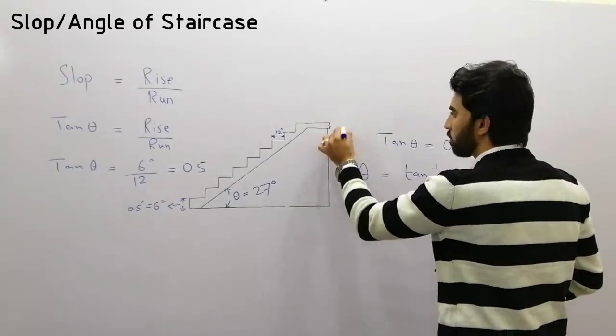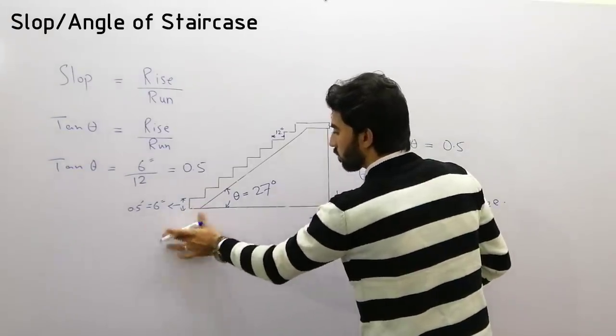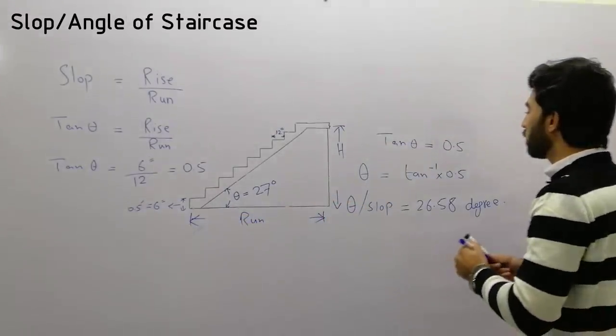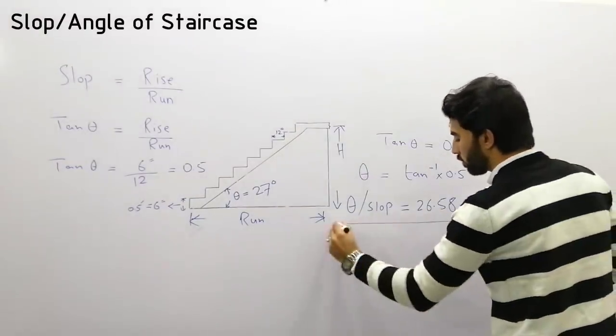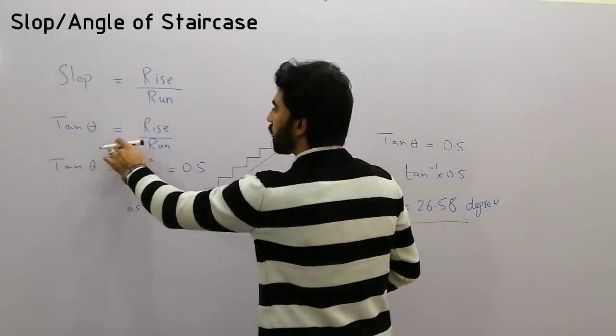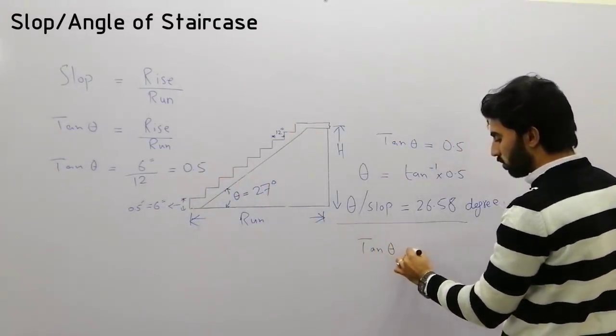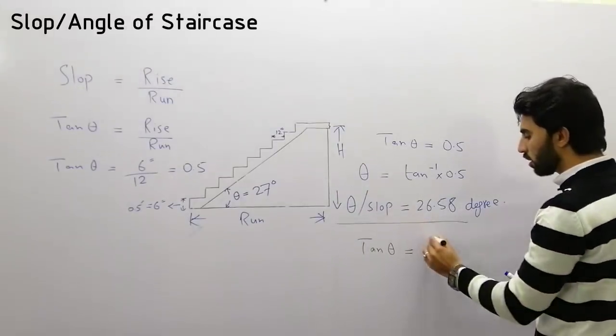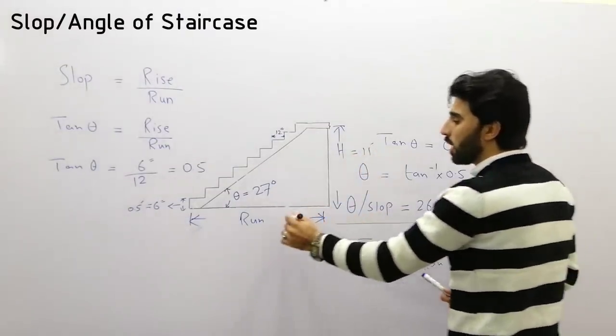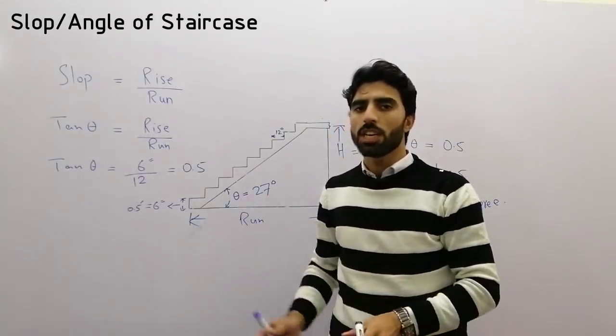There is also another way. Because this is the height of the floor and this is the run, you can find it using the same formula. Tangent theta equals rise divided by run. Here, tangent theta equals H divided by run, where H is the height, 11 feet, 12 feet, or any value, and the run should be calculated. If you have the riser or tread of the staircase, this is an easy way to find the slope or angle.